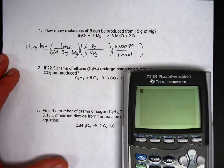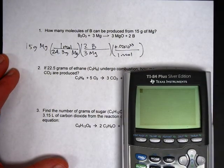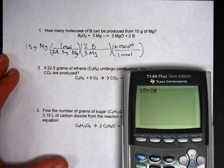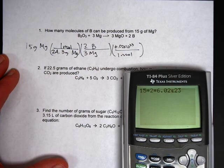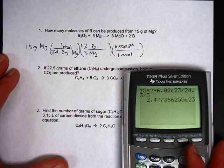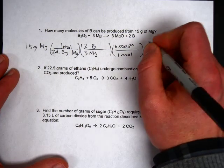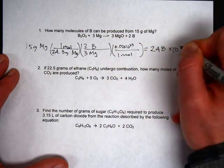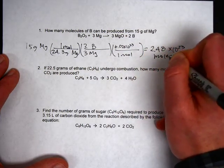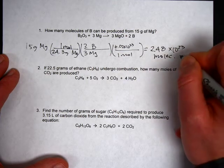One mole there and when you plug it into your calculator you'll get 15 times 2 times 6.02 times 10 to the 23rd divided by 24.3 divided by 3 and you get 2.47 times 10 to the 23rd. 2.48 we'll call it. Now the molecules of boron.